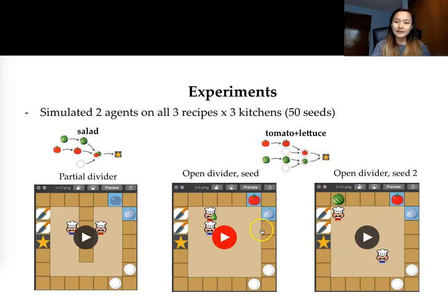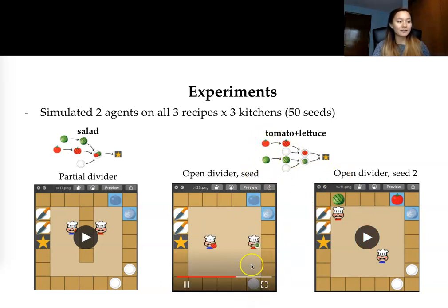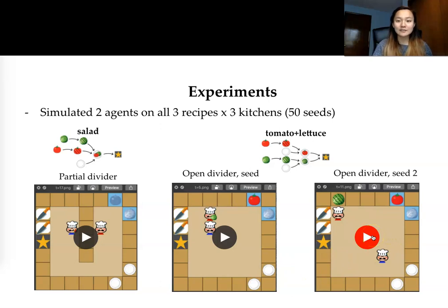In the next two videos that you're going to see is the same exact recipe, tomato and lettuce, evaluated on the same environment. But note here that there are different types of behaviors that emerge. In this first video here you're going to see that the agents are splitting up the tomato and the lettuce track so one agent handles just the lettuce and the other agent handles just the tomato.